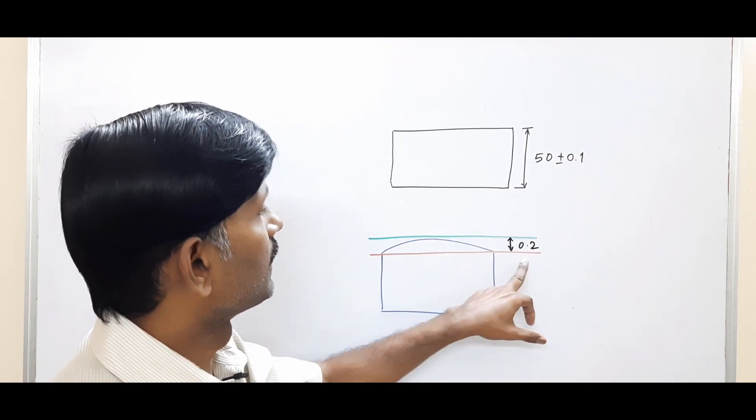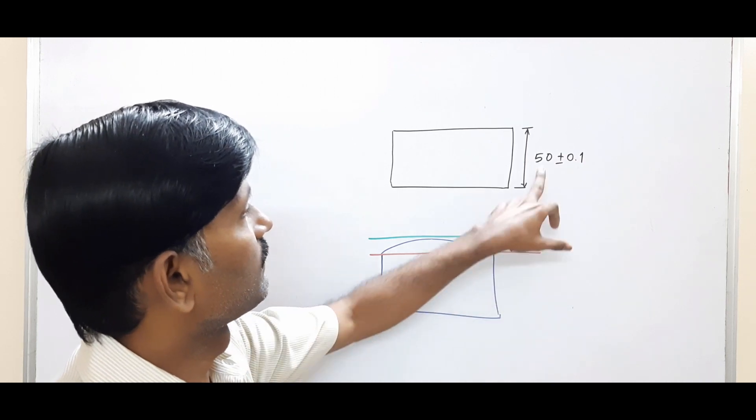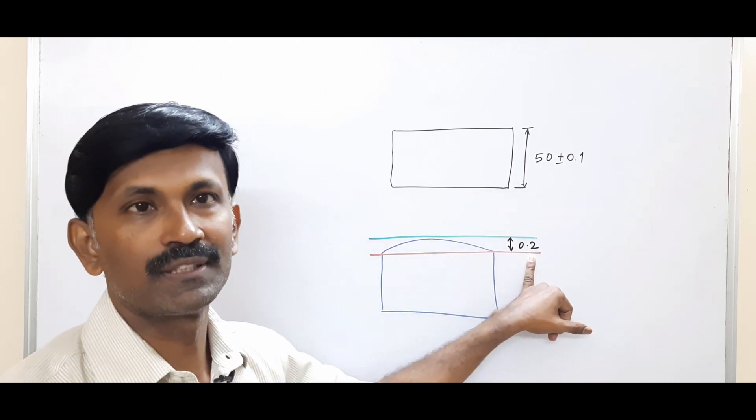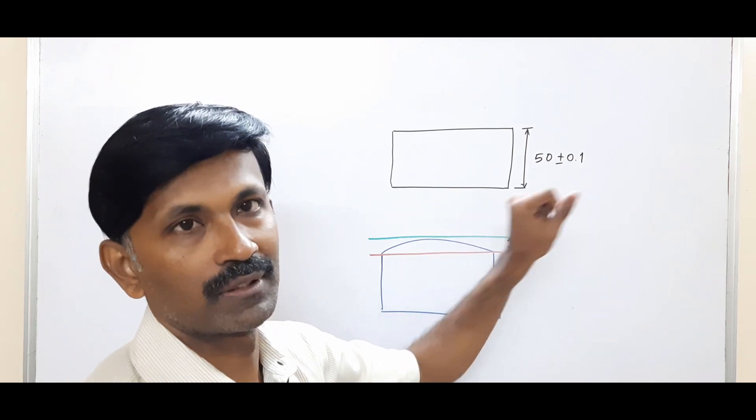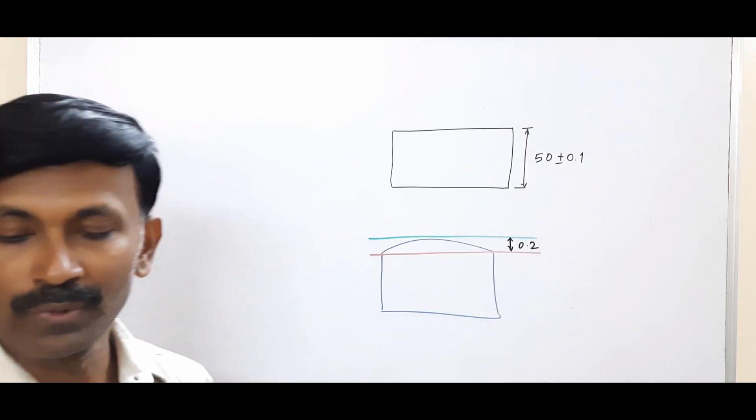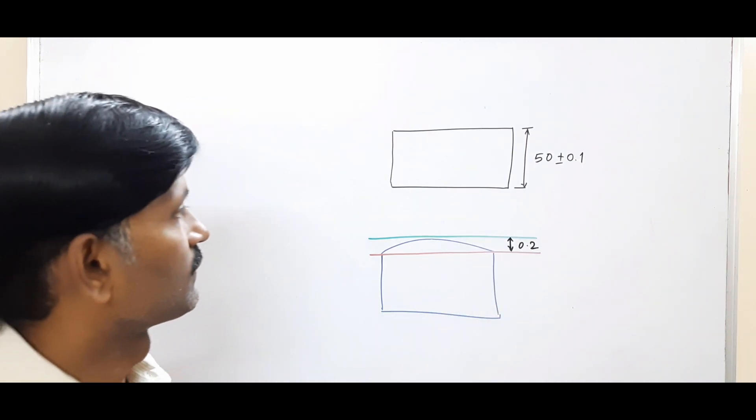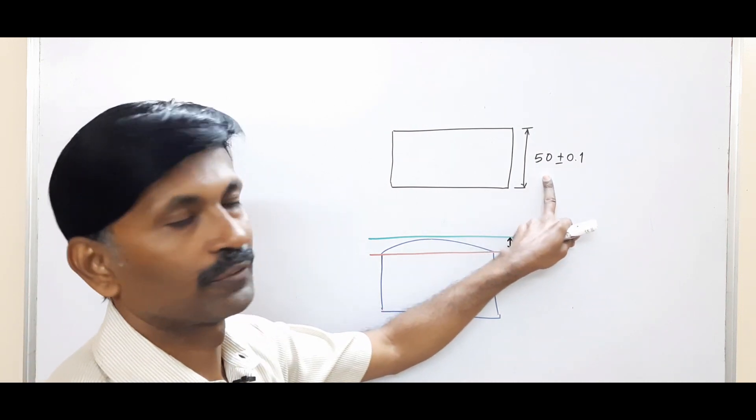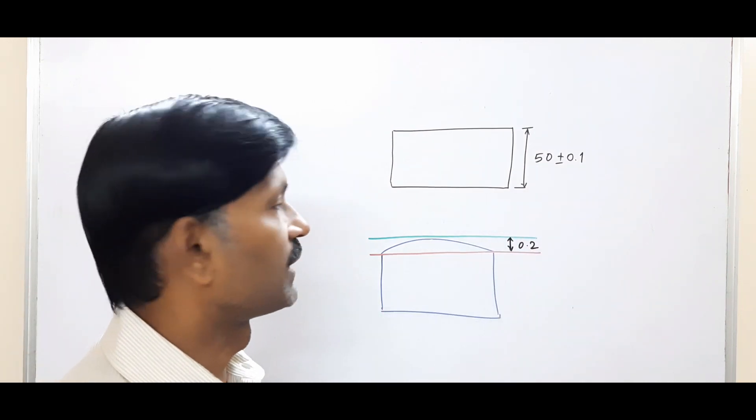In this case it should not exceed 0.2, which is the dimensional tolerance. If you want a refined flat surface better than what you are going to get out of rule one, then we have to apply flatness.